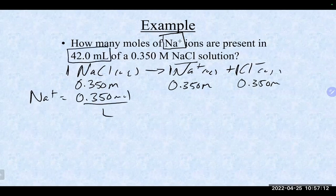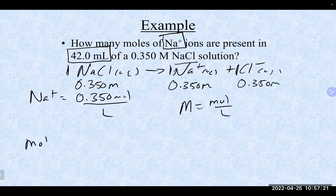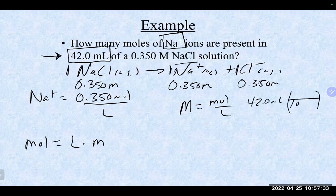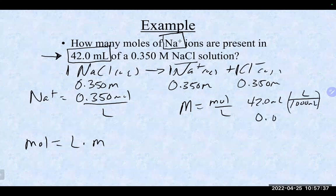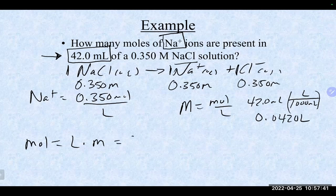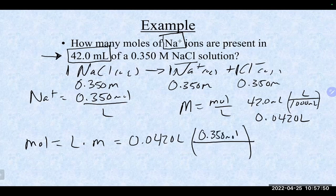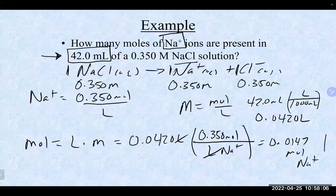We have 42 milliliters of solution. Using molarity — moles per liter — we solve for moles as liters times molarity. Convert 42 mL to liters: 42 ÷ 1000 = 0.042 liters. Setting up as dimensional analysis with moles on top and liters canceling: 0.042 liters × (0.35 mol/L) gives us 0.0147 moles of sodium ions.